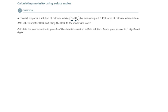By measuring out 0.178 micromoles of calcium sulfate into a 250 volumetric flask and filling the flask to the marker with water to create his 250 milliliter solution. Calculate the concentration in micromoles per liter of the chemist's calcium sulfate solution, round your answer to three significant digits.